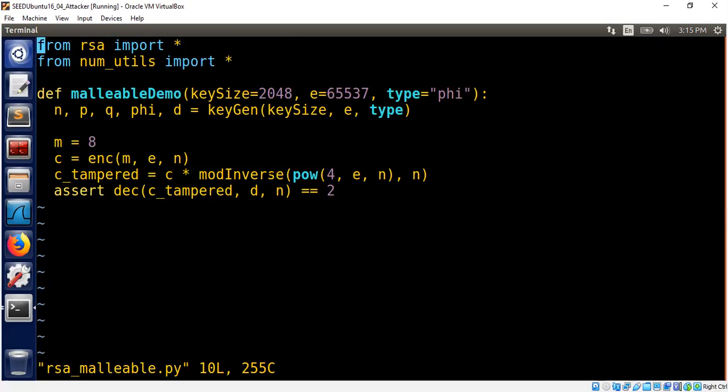You can also do multiplication, not just inverse. You can also multiply the ciphertext by 2 power e. Then the resulting plaintext will be 2 times the plaintext that was sent in mod n. All right, that's all. Thank you very much.